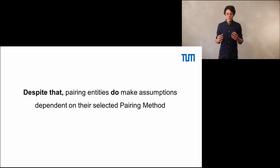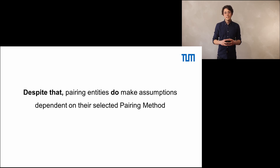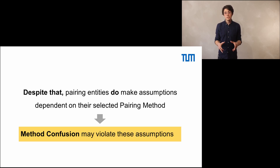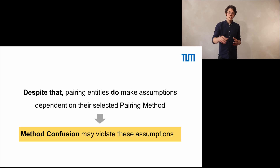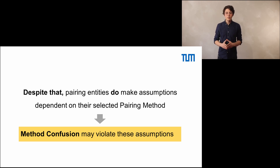Having this in mind, the next thing looks a little bit shady, because it's a fact that Bluetooth pairing methods rely on certain assumptions about the data they exchange, dependent on the pairing method selected. Taking back method confusion, an attacker can potentially break those assumptions, because those assumptions are based on what a device thinks the other device has concluded upon. Method confusion shows that this cannot be trusted, and these assumptions are therefore violated.